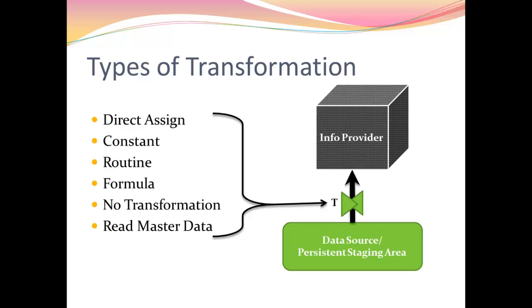Direct assign transformation - as it clearly mentions, the data from source field to our target field is directly assigned with no changes. Constant type is used when we want to fill the records with some constant values. In routine, we will be writing an ABAP code depending upon the requirement of the client. Formula type of transformation does calculation on the source field and the resultant info object is loaded into our info provider.